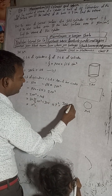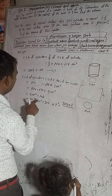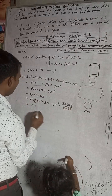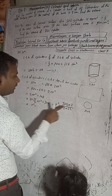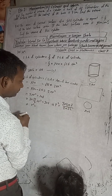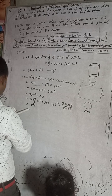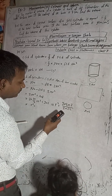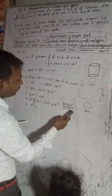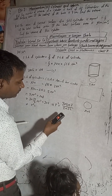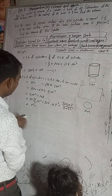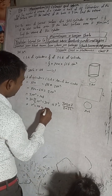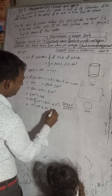Solving for r²: r² = 308 × 7 / 44 = 49. Therefore r = 7 cm.